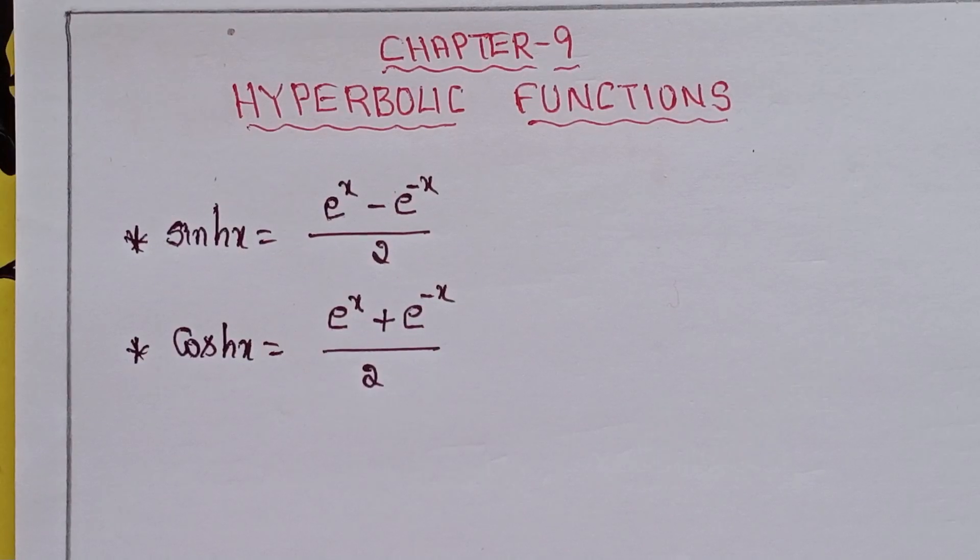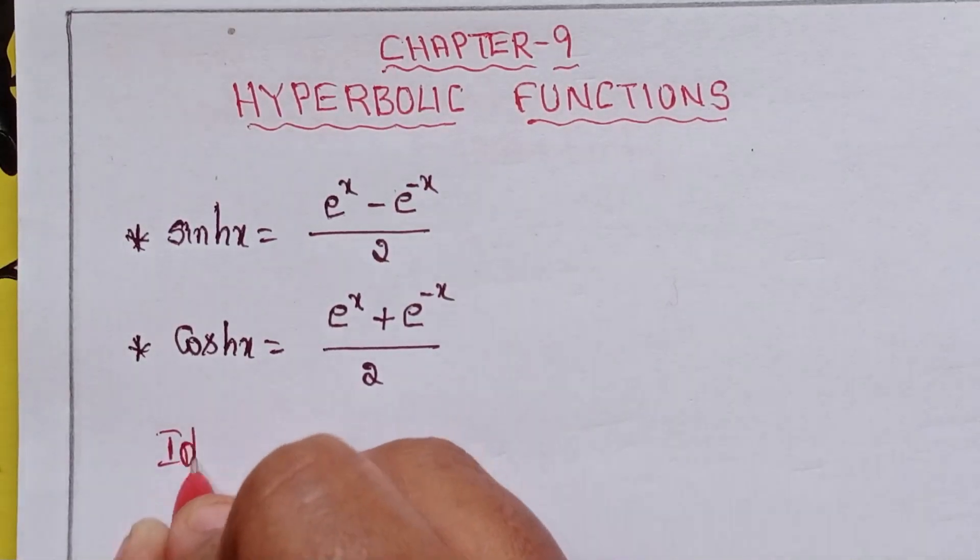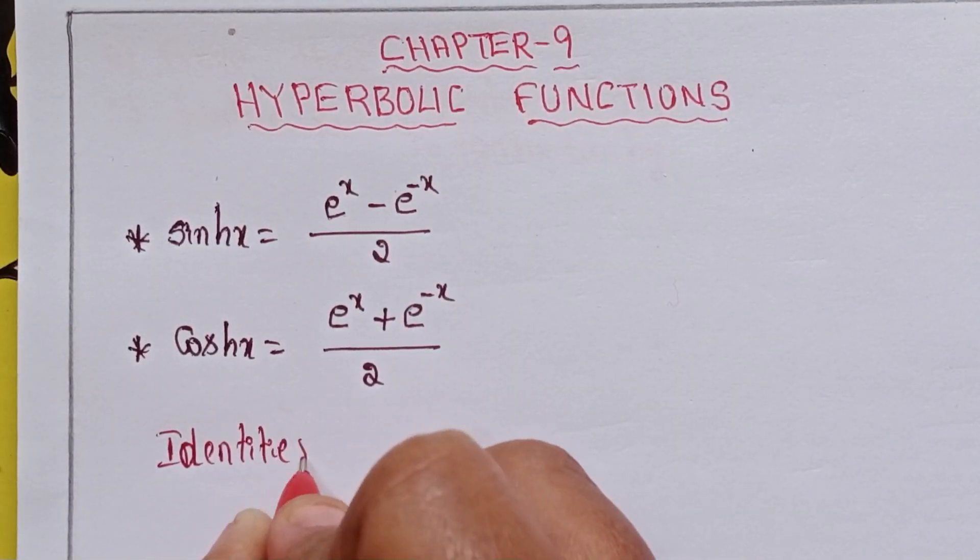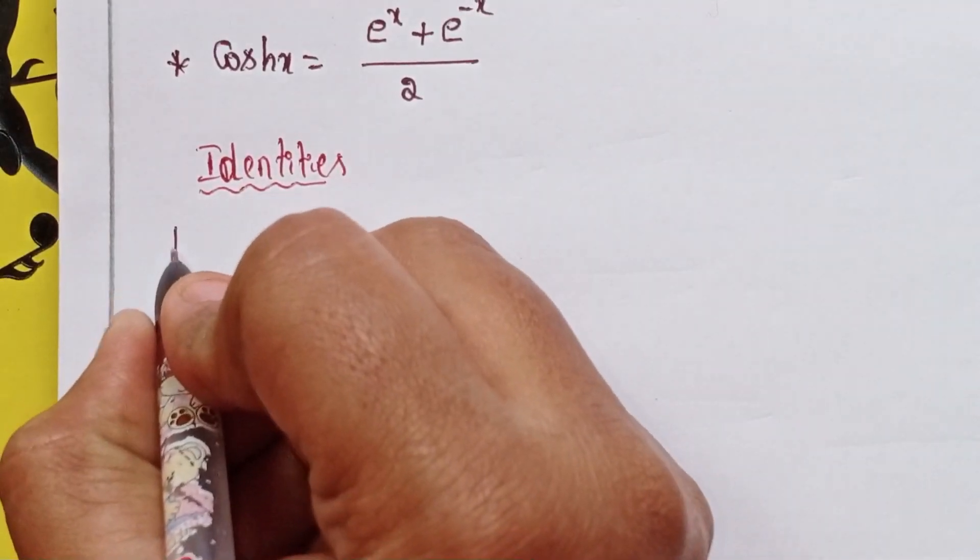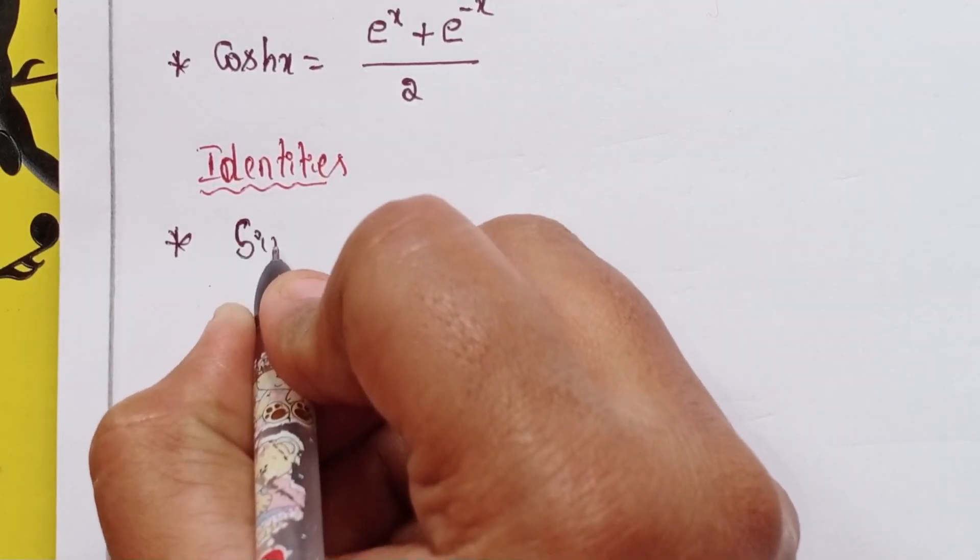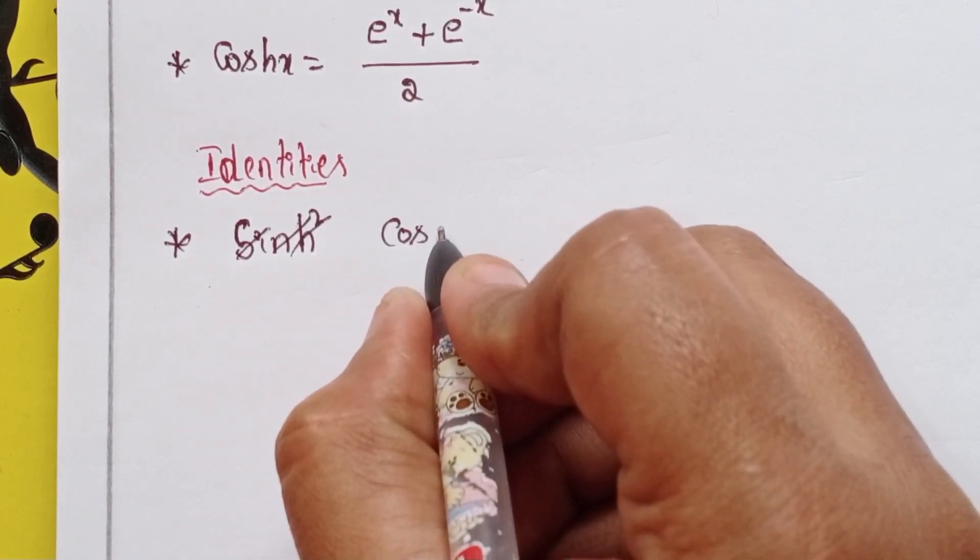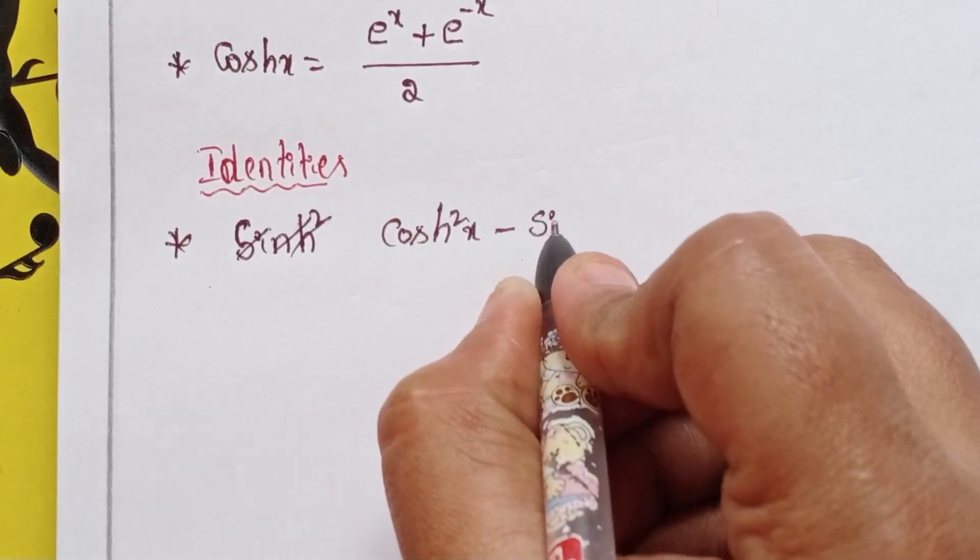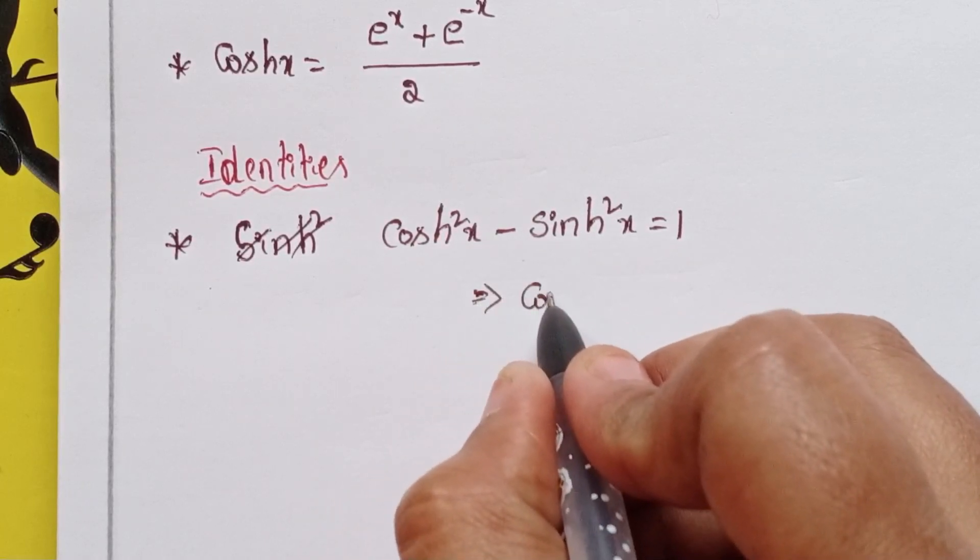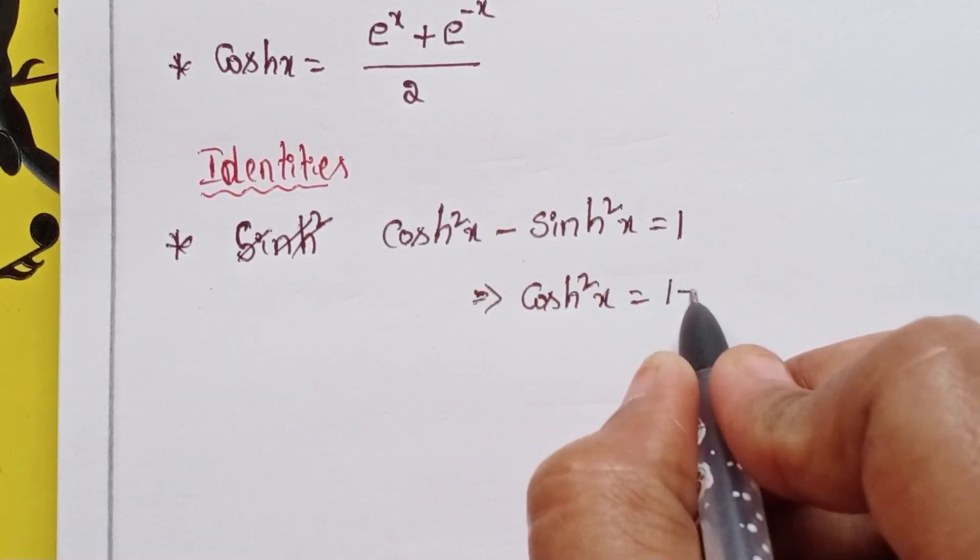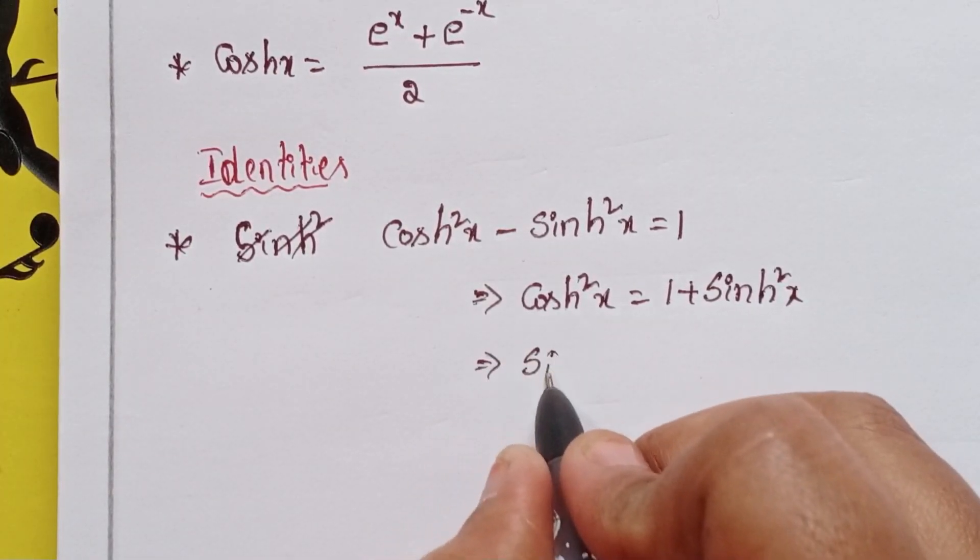Okay, next identities. First, cosh squared x minus sinh squared x equals 1. This implies cosh squared x equals 1 plus sinh squared x. Next, sinh squared x equals 1 plus cosh squared x.